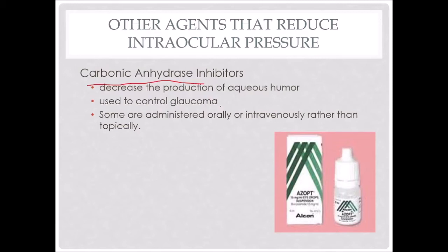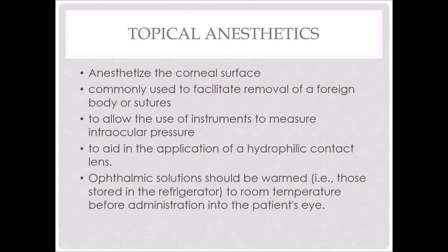Topical anesthetics anesthetize the corneal surface. There are some nerve endings in the corneal surface — you would know that if you've ever gotten something in your eye. These are commonly used to facilitate removal of a foreign body or suture. We could also use them when using instruments to measure intraocular pressure, like a tonometer or a tono-pen, or if we're going to put a contact lens on the cornea. We do want to warm them because they're stored in the refrigerator, otherwise it's uncomfortable when put on the eye. Proparacaine hydrochloride is a topical anesthetic that lasts 5 to 10 minutes, and we use it for the tono-pen.